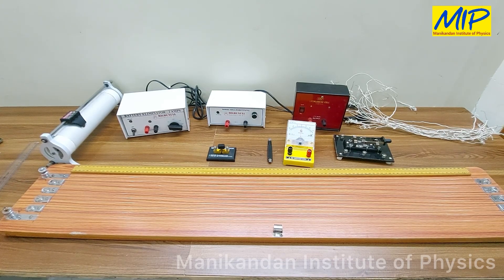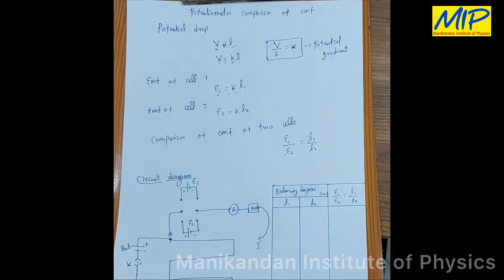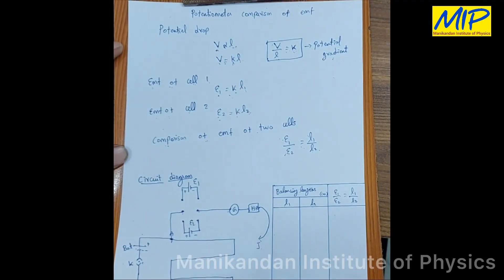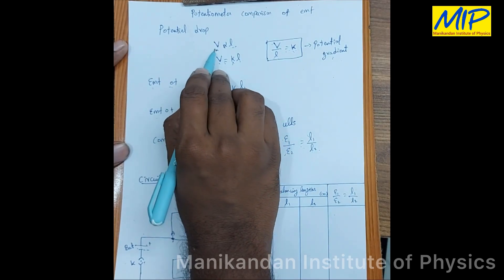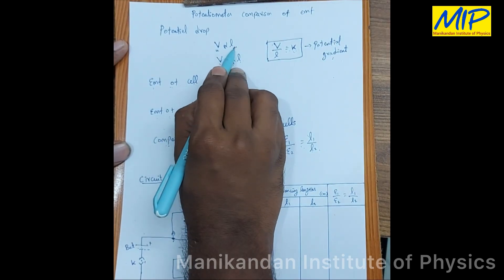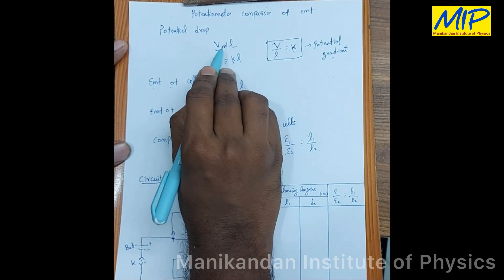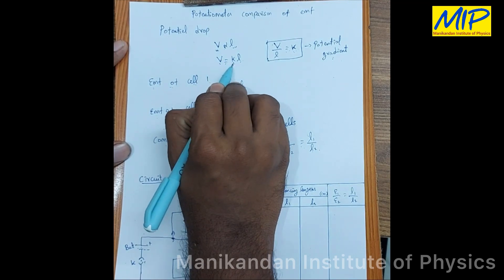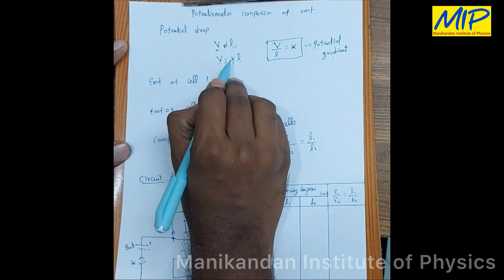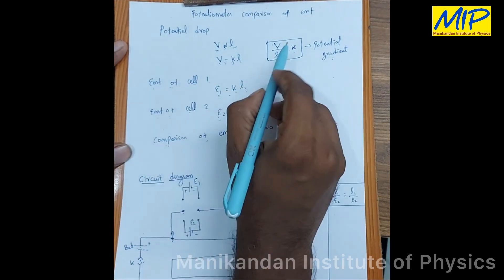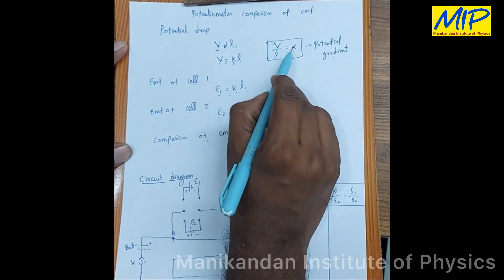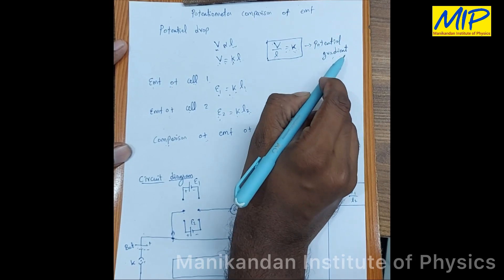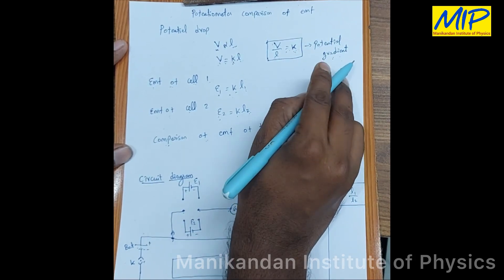First, I will explain the theory part. The principle of the potentiometer is: when a constant current flows through a wire of uniform area of cross section, the potential drop across any length of the wire is directly proportional to the length. The proportionality symbol is replaced by a constant k, so V equals k into l. Therefore, V by l equals k. This k is called the potential gradient, or potential drop per unit length.